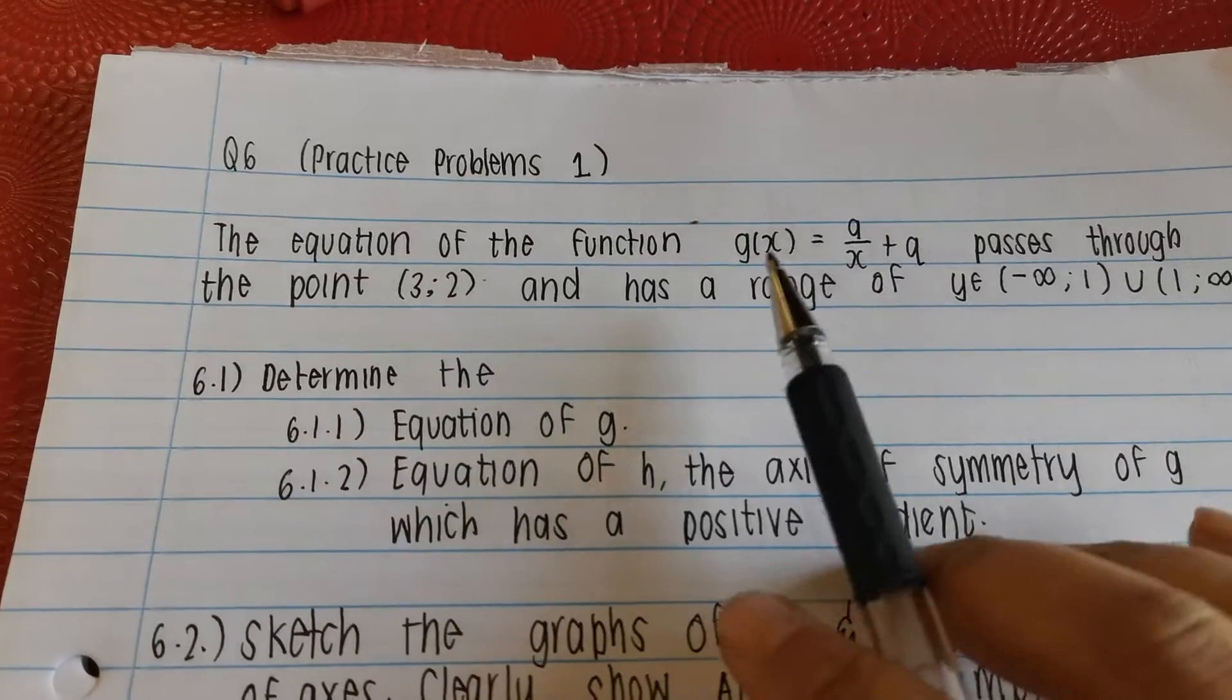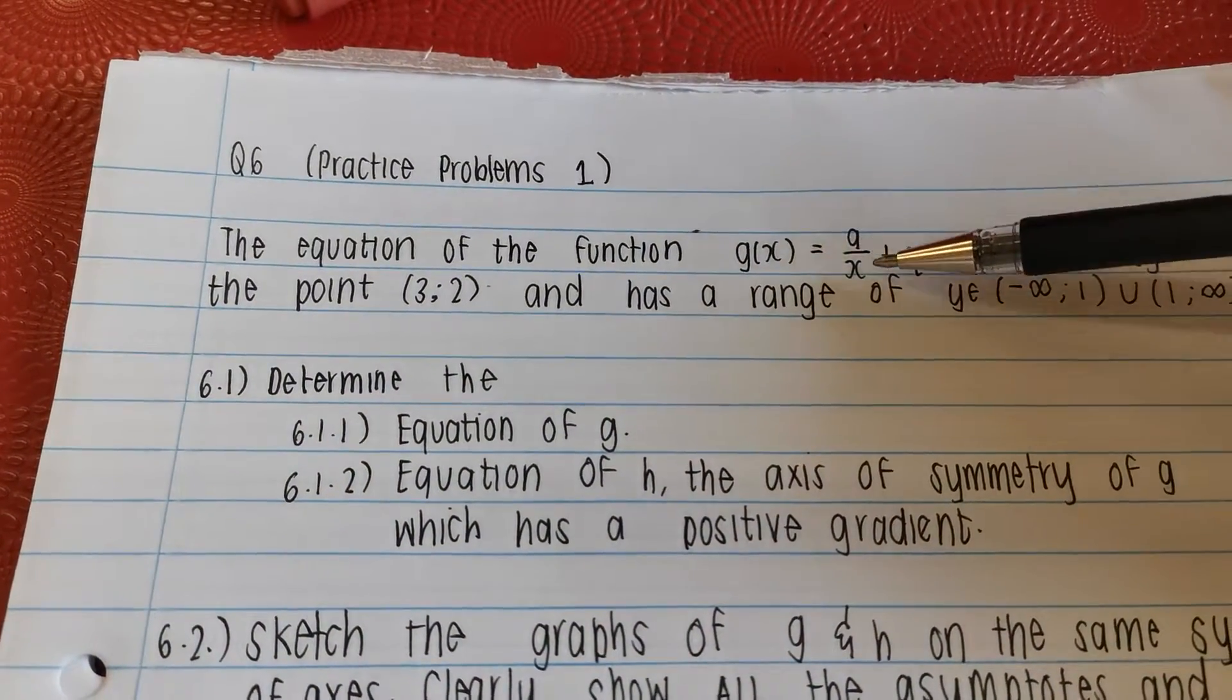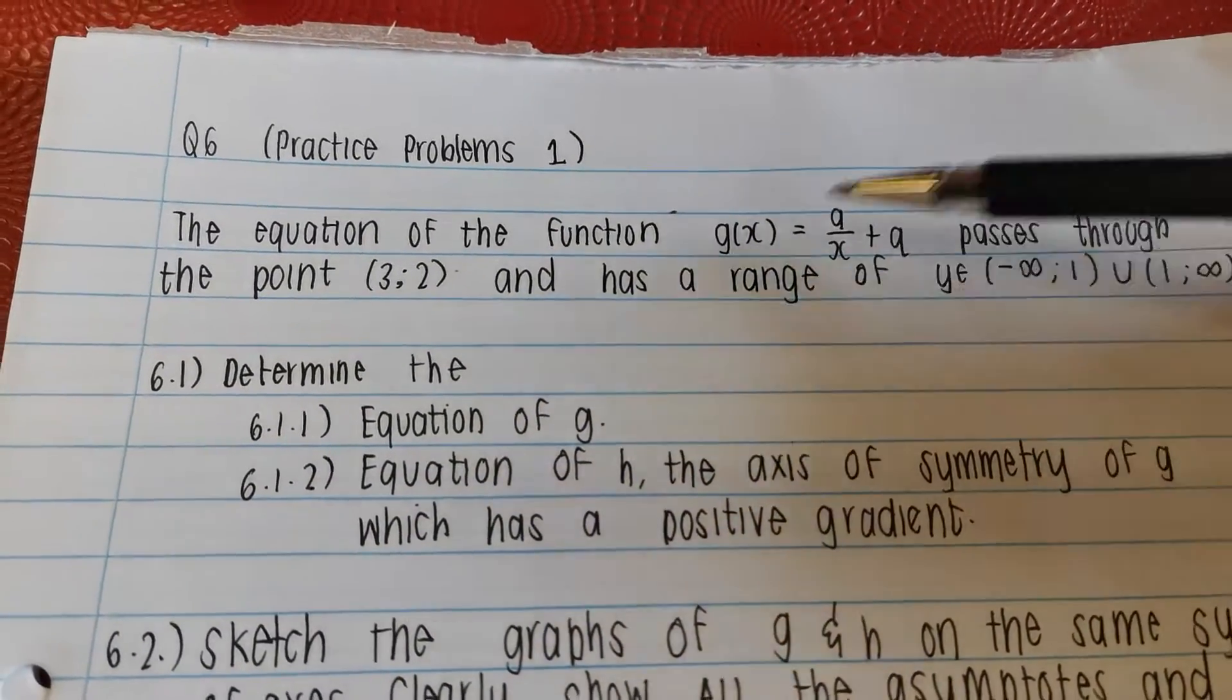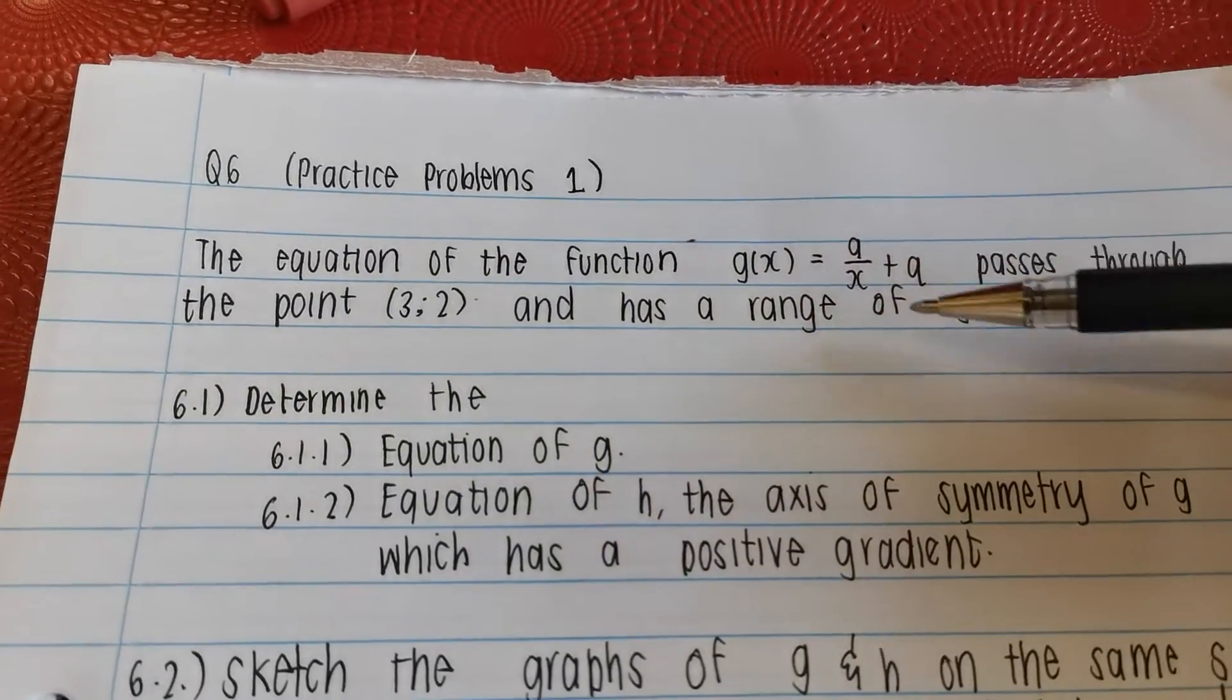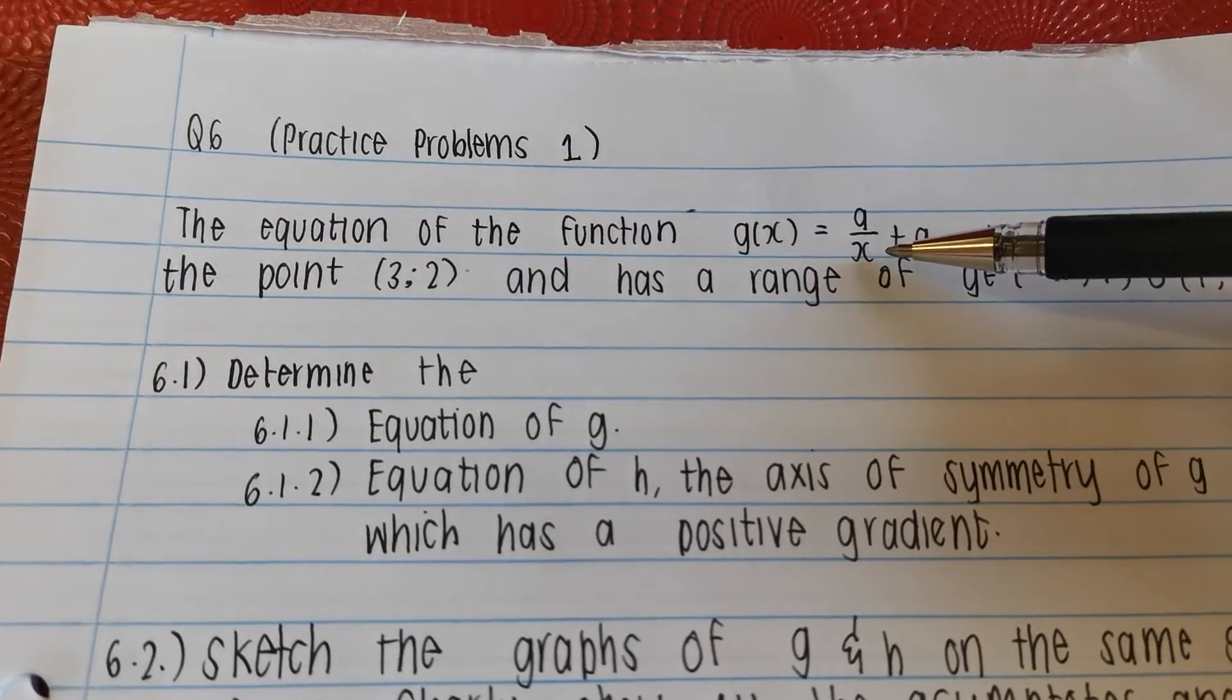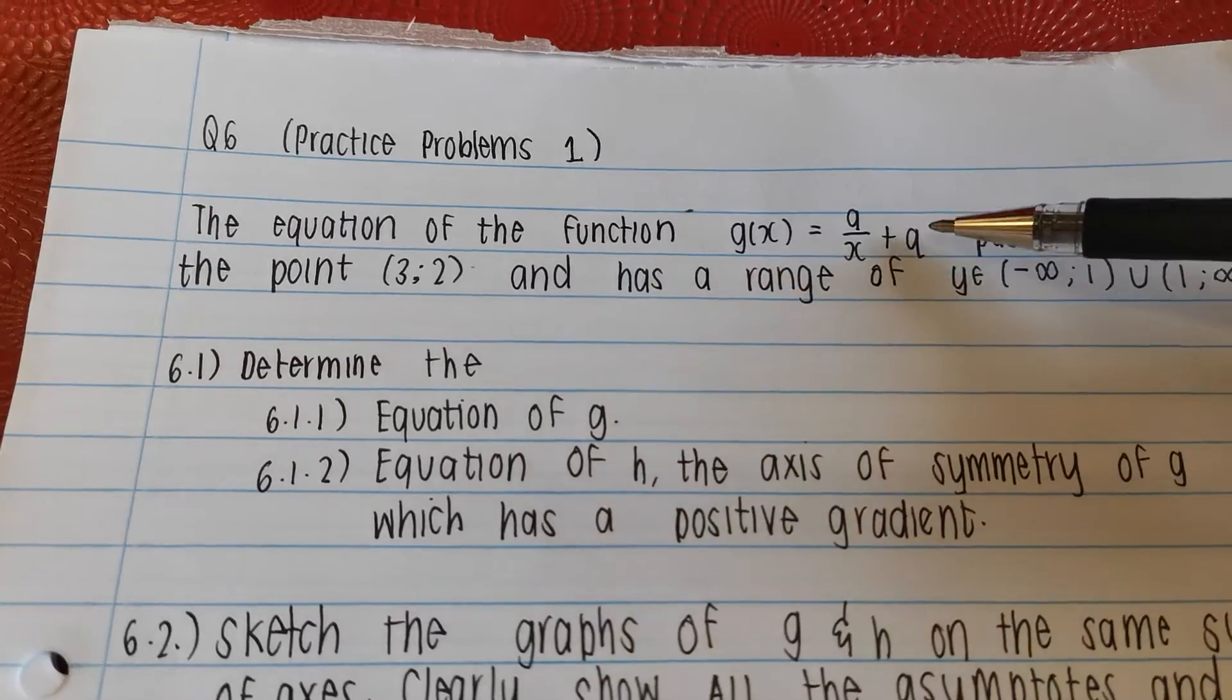So it says the equation of the function g(x), so that's the name of our equation, is a over x plus q. Because we don't have a picture with us accompanying this, how do we figure out what type of graph this is? We look at where the x is. Can you see the x is in the denominator? And if x is in the denominator, it makes it a hyperbola. So this is a hyperbola.